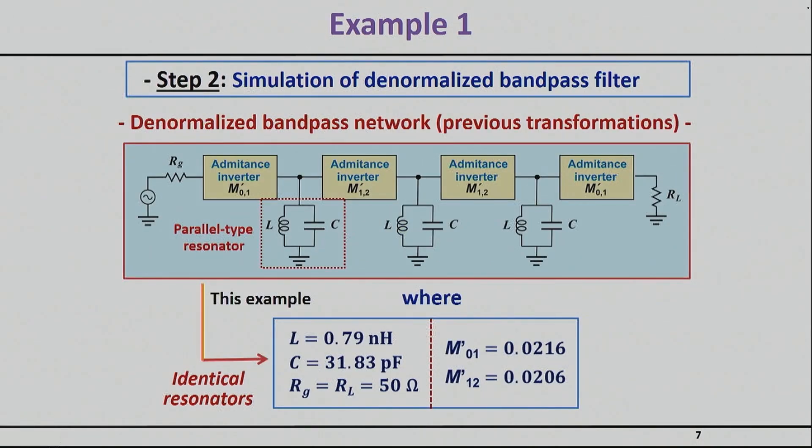So now you know basically everything in this filter. You know that if you were to do this with an ideal inductor it would have been 0.79 nanohenry based on the equation I just gave you before. You know the exact value of the capacitance and now you know the new denormalized coupling matrix values that are basically the inverter values for these guys.